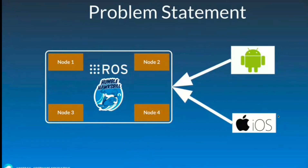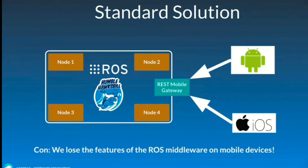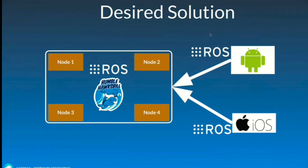The problem we have to solve is that we have a system built on ROS middleware, and we need to access it from mobile devices. The standard solution for this is basically to have a mobile gateway — it can be REST protocol, WebSocket, or whatever — but there is a custom mobile gateway which has to provide the necessary functionality for the mobile devices. The mobile devices have to implement a different API and cannot easily use the standard ROS features. The desired solution would be to be able to use the ROS APIs and ROS protocols on the mobile devices as well, and all the features of the ROS middleware.